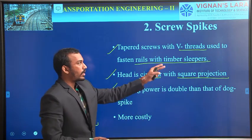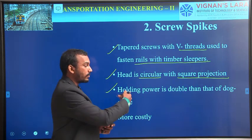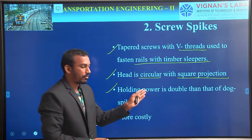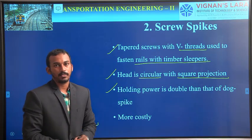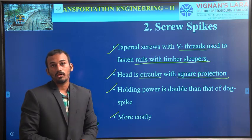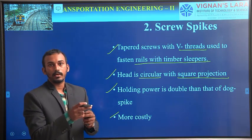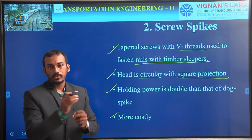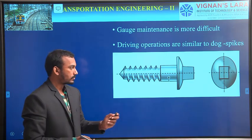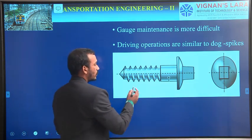Why? Because here we are using threads. Rather than impacting, we are using threads to hold the rails to the sleeper — that's why its holding power is double that of dog spikes. These are very costly. We need to maintain those threads and have a rounded head with a square section — so that's why its cost is very high. This is a screw spike — see, these are the threads.